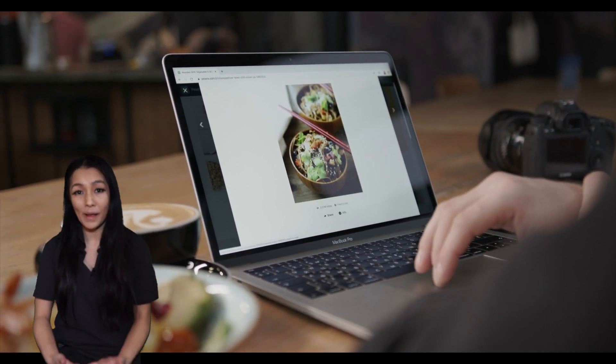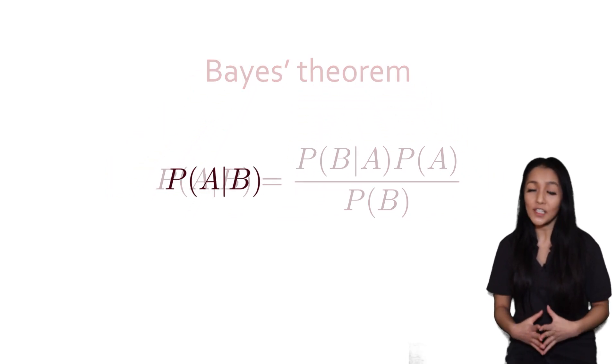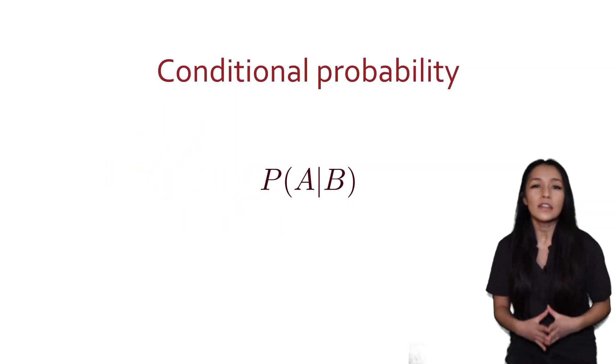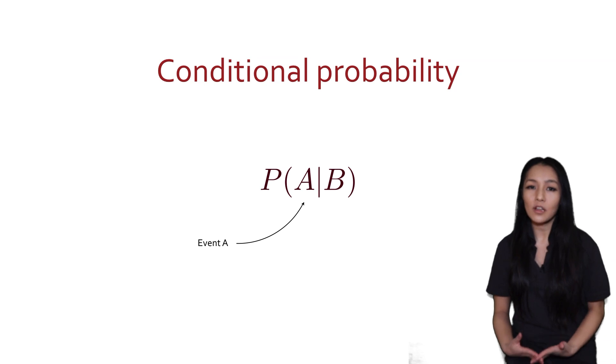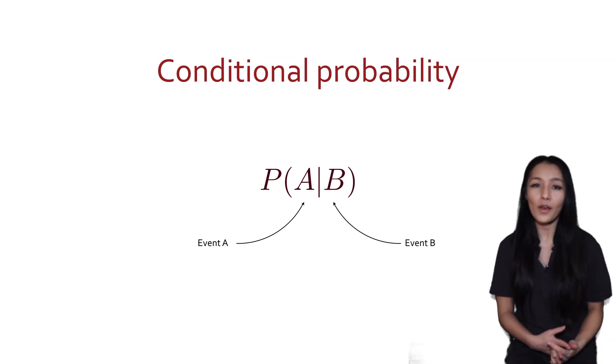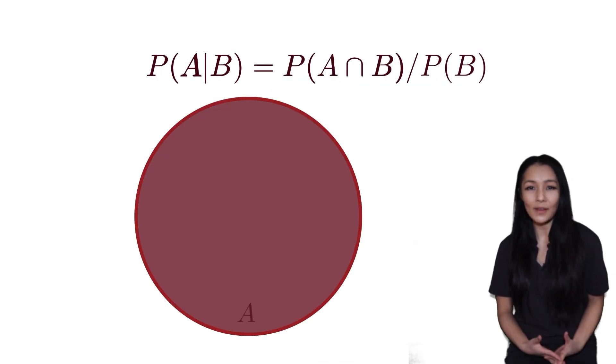At the center of all Bayesian computation is Bayes' theorem. In order to get to Bayes' theorem, we start at the conditional probability. The conditional probability is the probability of an event happening with some relationship to one or more other events.